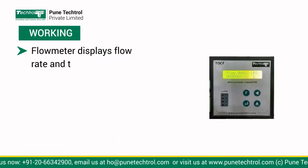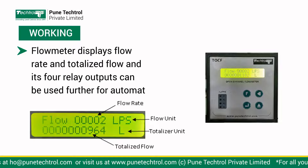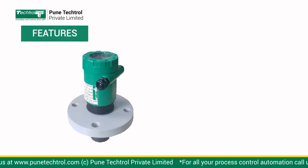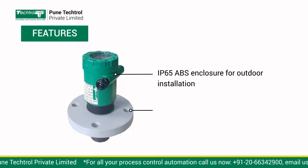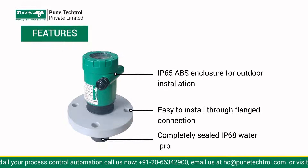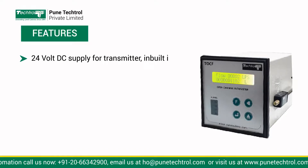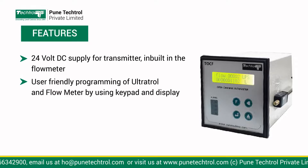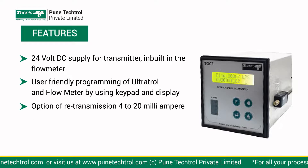The flow meter displays flow rate and totalized flow, and its 4 relay outputs can be used for automation. Features include an IP65 ABS enclosure for outdoor installation, easy installation through flanged connection, completely sealed IP68 waterproof transducer, 24V DC supply for transmitter built into the flow meter, user-friendly programming of Ultratrol and flow meter by keypad and display, and option of retransmission 4 to 20mA for remote indication.